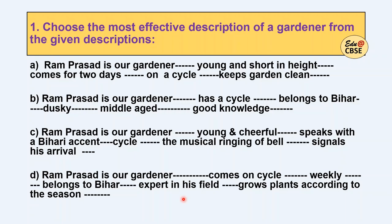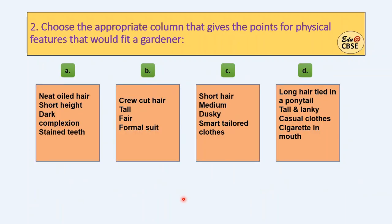Now next one: choose the appropriate column that gives the points for physical features that would fit a gardener. So accordingly, select your answer.